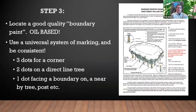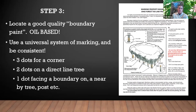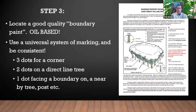Step three: locate a good quality boundary paint. They sell actual boundary paint. A good oil-based paint — we prefer you apply it with a brush and a gallon can, as you'll see in the videos. Aerosols are not an absolute must, but you'll be doing it more frequently. We're going to introduce you to the universal system of marking boundaries for woodlands: three dots for a corner, two dots for a line tree, and one dot facing the boundary on the nearest tree. Try to stay on that boundary line as much as you can.